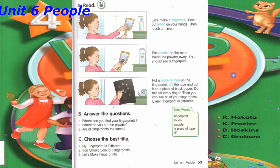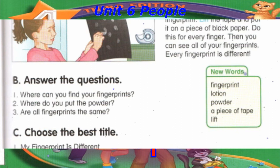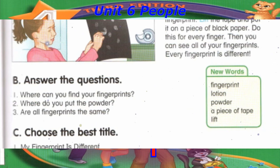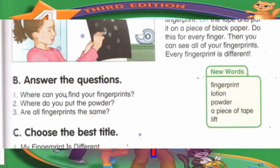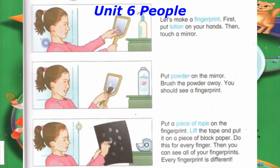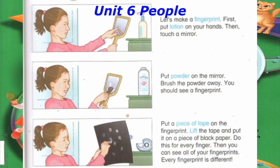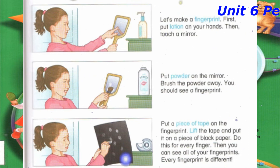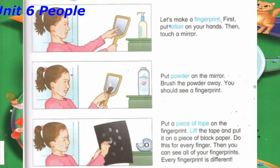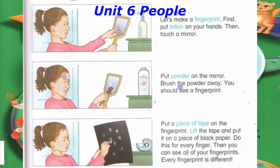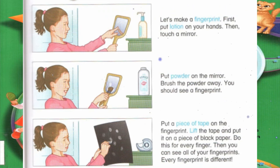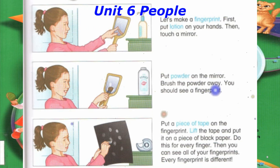Track 40, Let's Read A. Read new words: Fingerprint, Lotion, Powder, A piece of tape, Lift. Let's make a fingerprint. First, put lotion on your hands. Then touch a mirror. Put powder on the mirror. Brush the powder away. You should see a fingerprint. Put a piece of tape on the fingerprint. Lift the tape and put it on a piece of black paper. Do this for every finger. Then you can see all of your fingerprints. Every fingerprint is different.